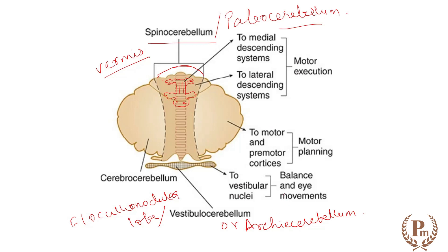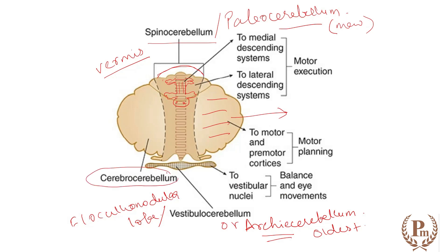Spinocerebellum is also called paleocerebellum. Phylogenetically, archicerebellum is the oldest one. Next comes the paleocerebellum — it is newer but not the newest. The most modern one is the lateral part, which is also called cerebrocerebellum or neocerebellum.